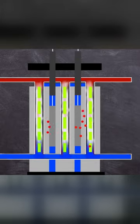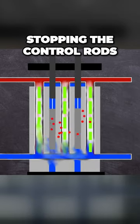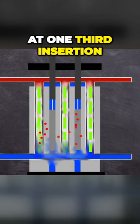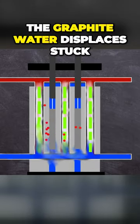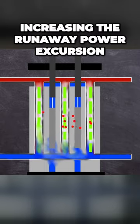During the spike, some of the fuel rods ruptured, blocking the control rod columns and stopping the control rods at one third insertion. This left the graphite water displacers stuck in the lower part of the core, increasing the runaway power excursion.